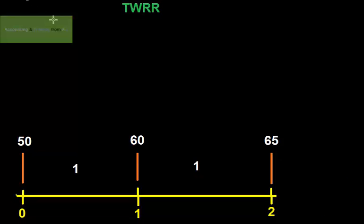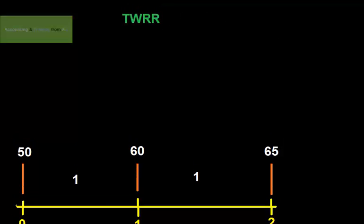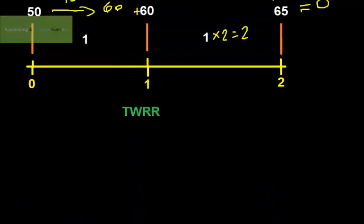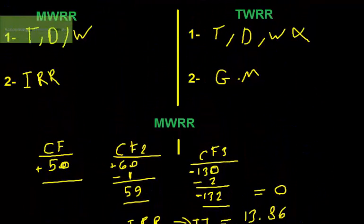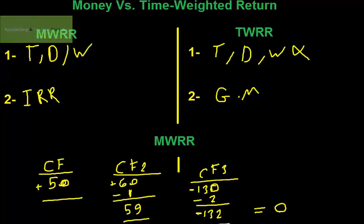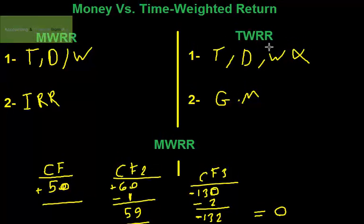Now let's implement our previous example on the time weighted rate of return. Before implementation, let's refer back to the first and second differences: time weighted rate of return is not affected by the timing of deposit or withdrawal of the investment, and it is computed using the geometric mean.